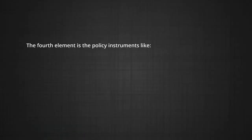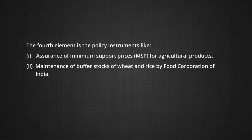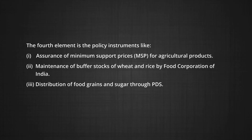Setbacks are due to inadequate coverage of farmer members, lack of appropriate linkage between marketing and processing cooperatives, and inefficient financial management. The fourth element is policy instruments: number one, assurance of Minimum Support Price (MSP) for agricultural products; number two, maintenance of buffer stocks of wheat and rice by the Food Corporation of India; number three, distribution of food grains and sugar through the Public Distribution System (PDS).